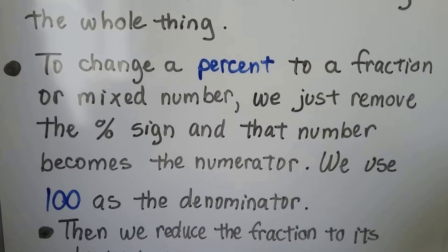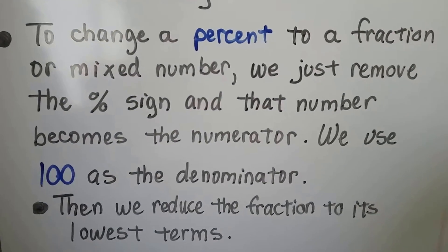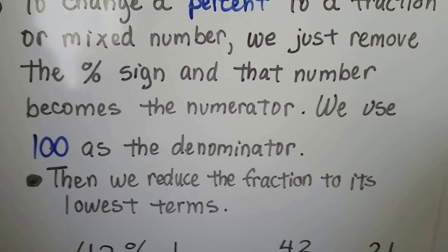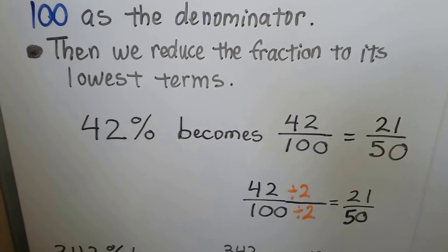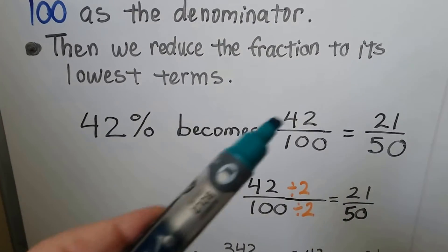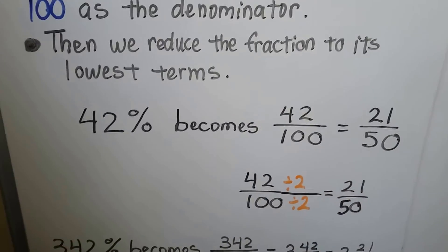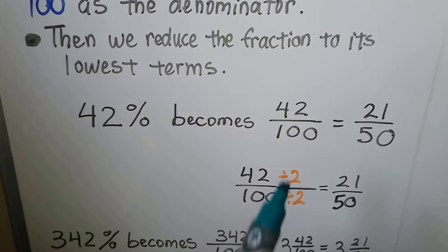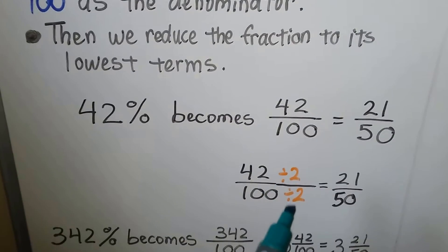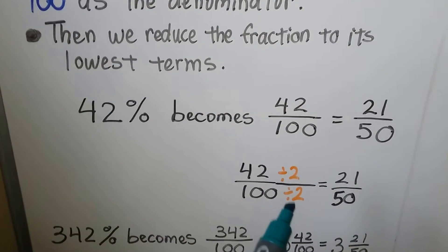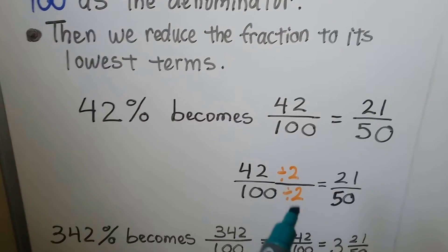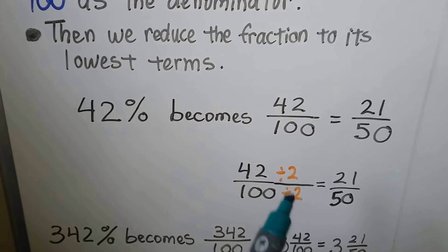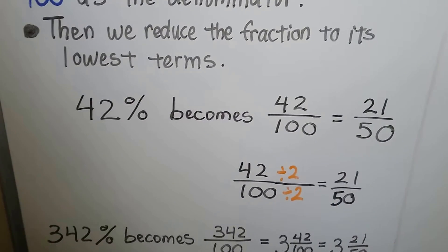To change a percent to a fraction or mixed number, we just remove the percentage sign and that number becomes the numerator. We use 100 as the denominator. So this is fairly straightforward. 42 percent becomes 42 over 100. We can simplify this by dividing both the numerator and denominator by two. Remember when simplifying, reducing to its lowest terms, they have to be divided by the same number. So we get 21 fiftieths.